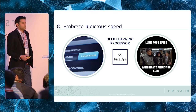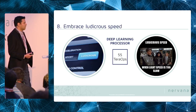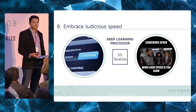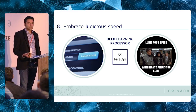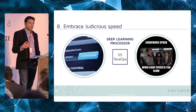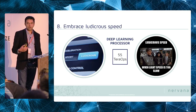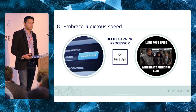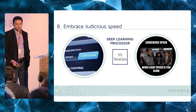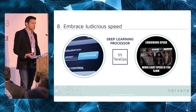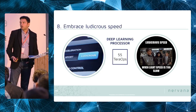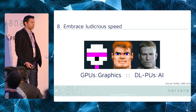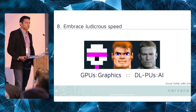Deep learning training can take weeks or even months in some cases. If you have access to technology that can give you a big speed advantage, that can provide a huge competitive edge in whatever space you're in. This is perhaps what we're best known for — Nirvana is known for achieving ludicrous speeds on GPUs as well as on our upcoming Nirvana engine processor. Other companies like Google have also announced deep learning-specific processors.